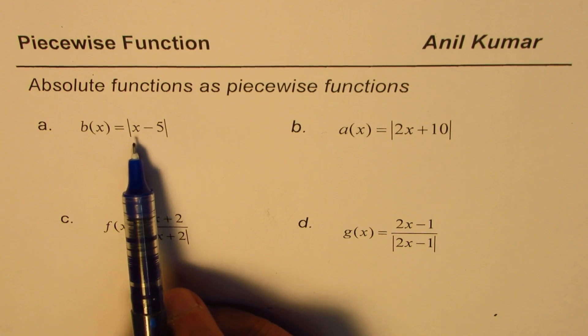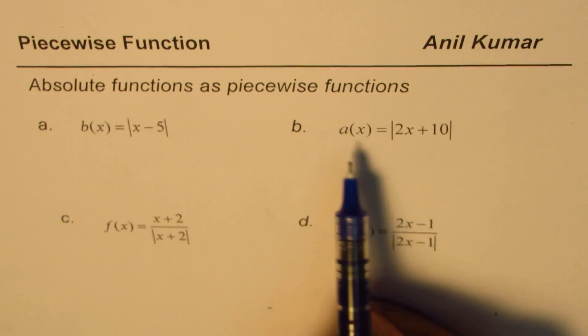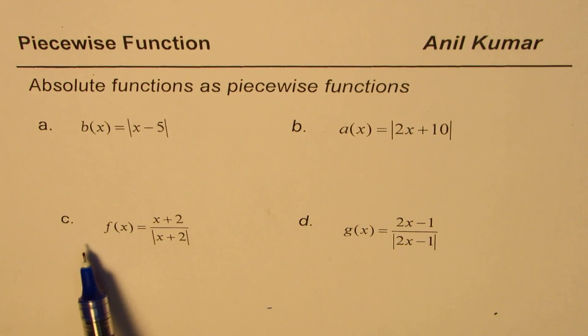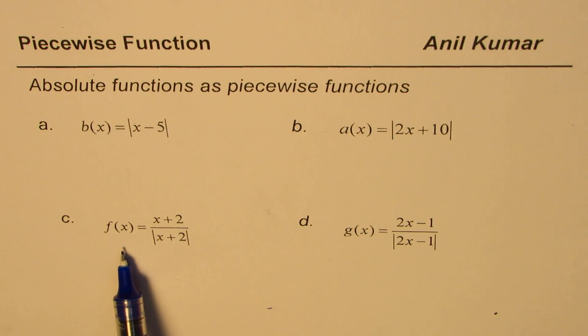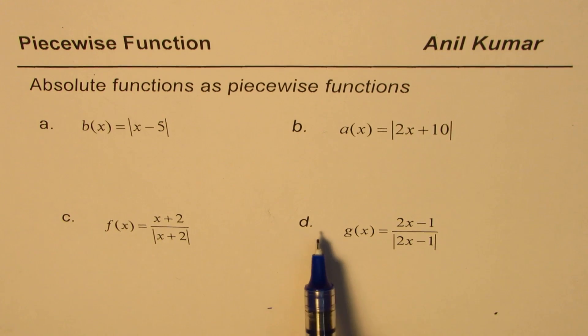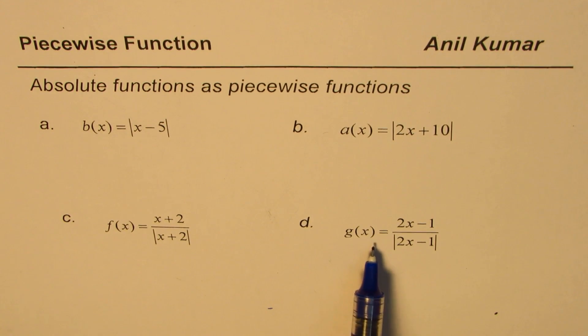b(x) equals to x minus 5 absolute value. a(x) is equals to absolute value of 2x plus 10. And c is f(x) equals to x plus 2 divided by absolute value of x plus 2. d is g(x) equals to 2x minus 1 divided by absolute value of 2x minus 1.